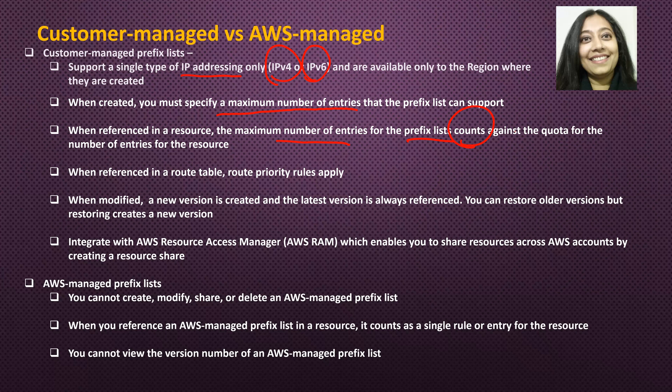So for example, let's say you created a prefix list with max entries of 10 and you use that prefix list in a security group. Now those 10 entries will be counted against the quota or the total number of entries allowed for that specific security group. When referenced in a route table, route priority rules apply. When modified, a new version is created and the latest version is always referenced. That means the customer managed prefix list supports versioning.